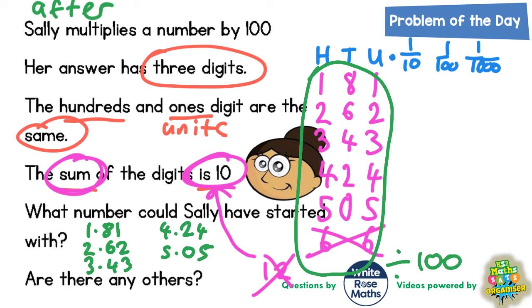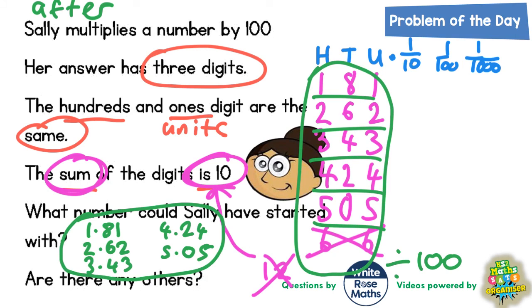So any of those numbers are what Sally could have started with — there are actually five different answers. Just let's double-check: her answer's got three digits, so these answers all have three digits. The hundreds and the ones digit have always been kept the same, and the sum of the digits has always been 10. So that appears to work. Final answer: 1.81, 2.62, 3.43, 4.24 or 5.05.